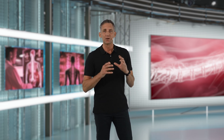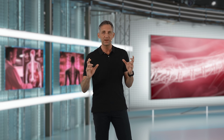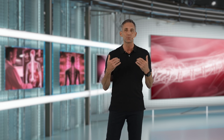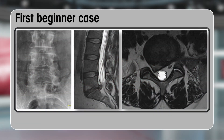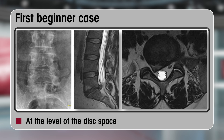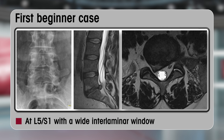So to cut a long story short — what is the perfect beginner's case? This is a question I am repeatedly asked. The perfect beginner's case is a fresh soft disc herniation, rather acute, at the level of the disc base. Preferably not a sequestration cranially or caudally, but at the disc base level at L5S1 where you have a very wide interlaminar window — such as the case you can see here — for your first 5 or 10 cases.